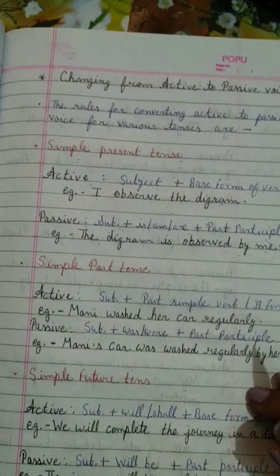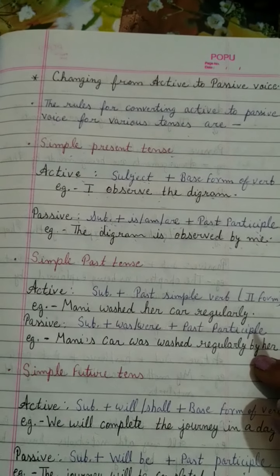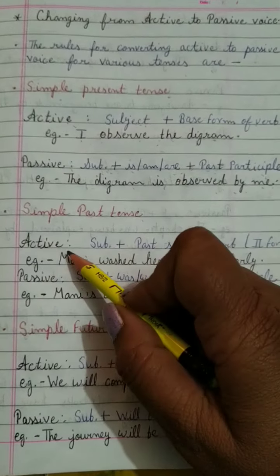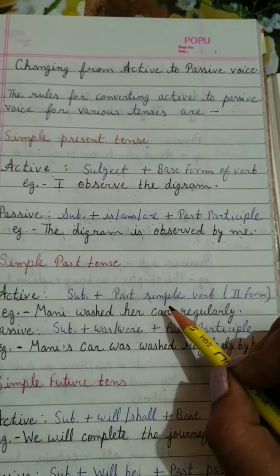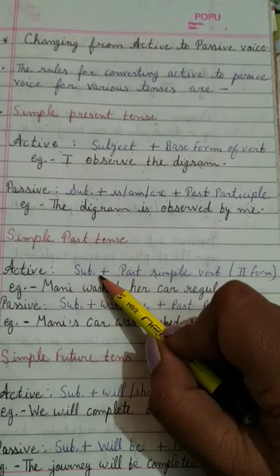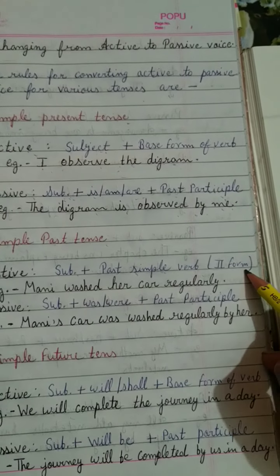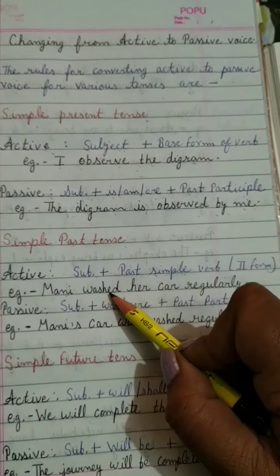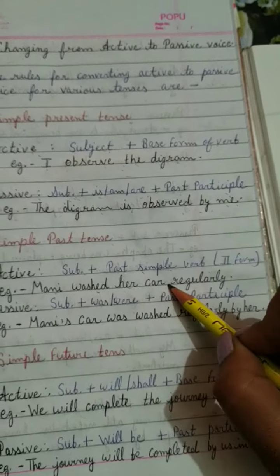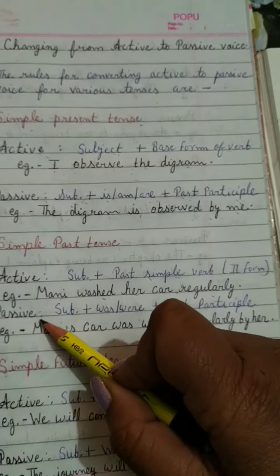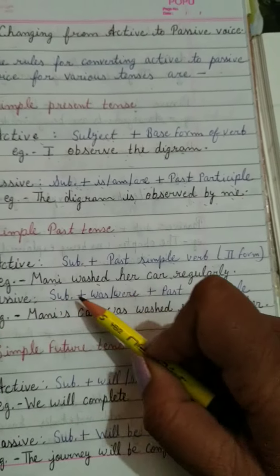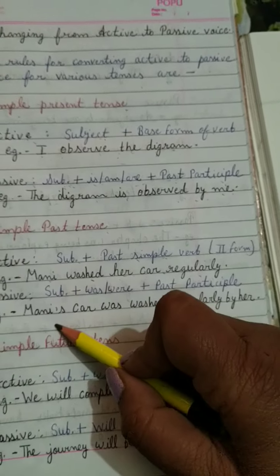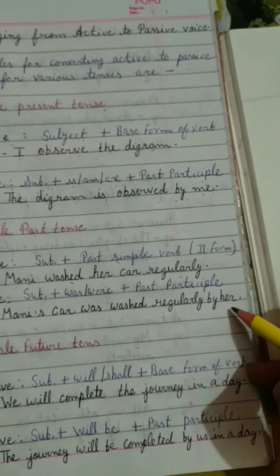Next is simple past tense. Simple past tense की formation होती है: subject plus past simple verb यानि second form. For example: 'Money washed her car regularly.' This is the subject, 'washed' is the verb, 'her car' is the object, and 'regularly' is a complement. Passive voice बनाएंगे तो: her car की जगह 'money's car' subject बन जाएगी — 'Money's car was washed regularly by her.'